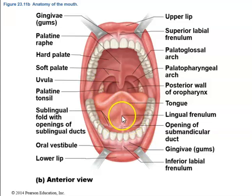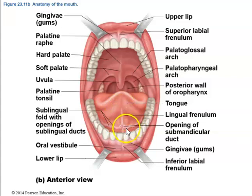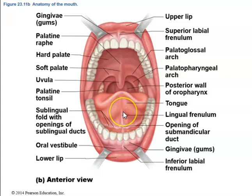We also have a lingual frenulum, a tissue that attaches the tongue to the floor of the mouth. Sometimes the frenulum is elongated or larger than normal, and it may need to be cut — especially in pediatric patients who have problems pronouncing words, since we need the tongue to speak.